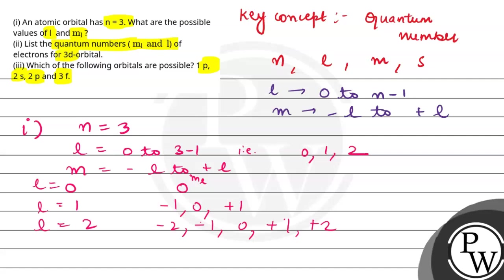So given quantum numbers, which are possible? That is 2s and 2p. Hope you find the answer. Best of luck. Thank you.